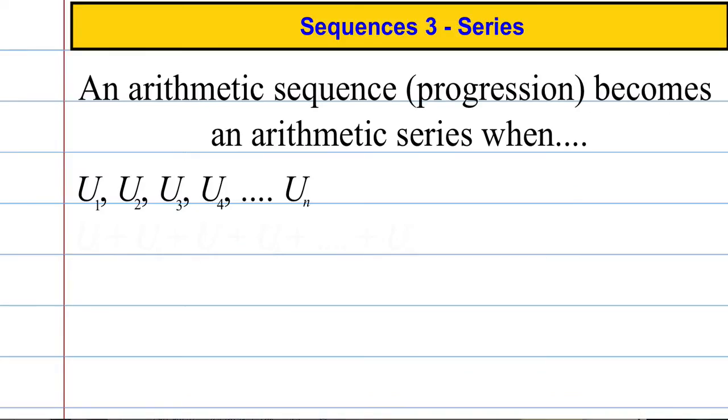Okay so what is a series? We should be familiar with the term arithmetic sequence from previous videos. It is sometimes known as an arithmetic progression or can even be called an AP. An arithmetic progression becomes an arithmetic series when we take each term—the first term, second term, third term, all the way up to the last term U of N—and if we start to add them all together, it becomes a series.